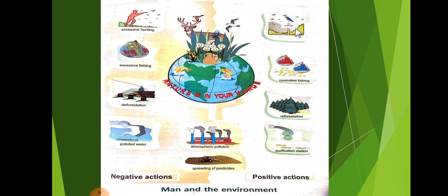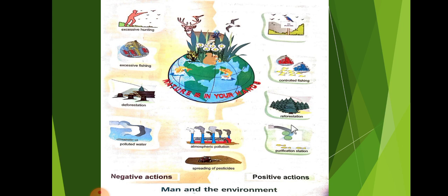The corresponding positive actions are: controlled fishing — not stopping fishing entirely, but at a specific limit and certain rate. Reforestation — إعادة تشجير, إعادة زرع الأشجار. And we must make a purification station — تكرير للمياه — for sewage water, so it does not contaminate groundwater. We must purify and treat the water before it reaches the seas and oceans.